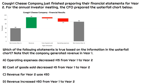In this question, we have Cowgirl Cheese Company. They just finished their financial statements for year two, and the CFO prepared the waterfall chart that we can see. Ultimately, what we need to do is go through the options and see which statement about this waterfall chart is true.